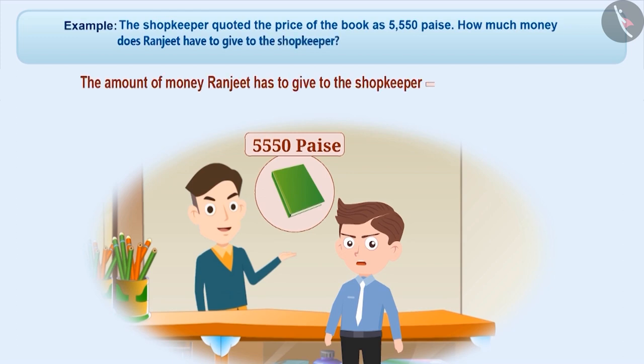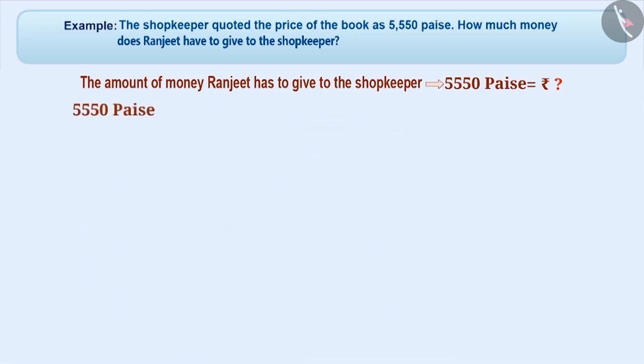To find out the amount Ranjit has to give the shopkeeper, we need to express 5,550 paise in rupees. We can write 5,550 paise equals 5,500 paise plus 50 paise. Since 100 paise equals 1 rupee, therefore, 5,500 paise equals 55 rupees.